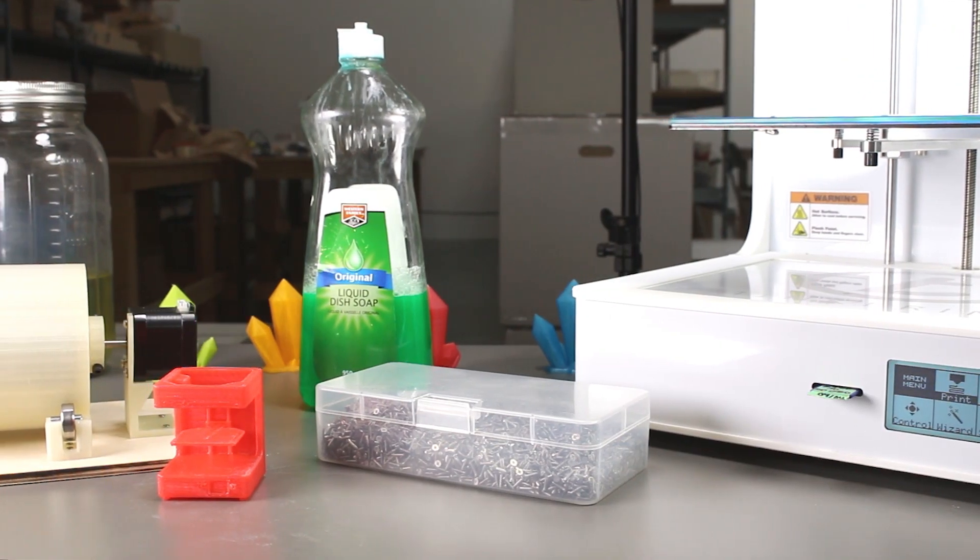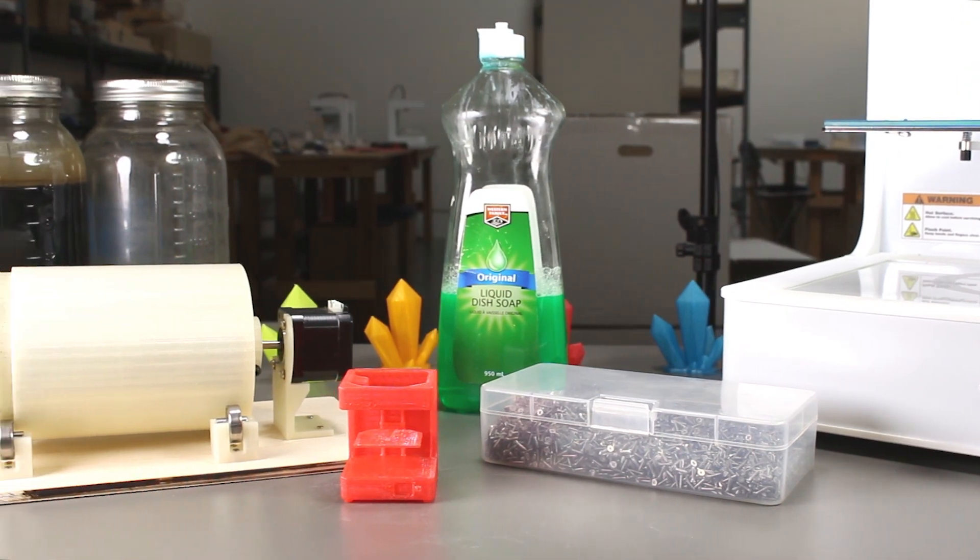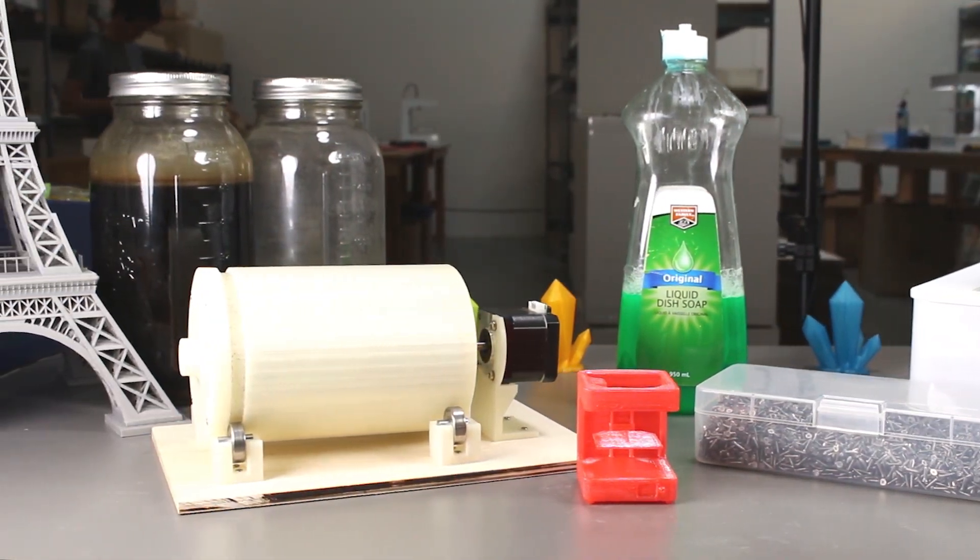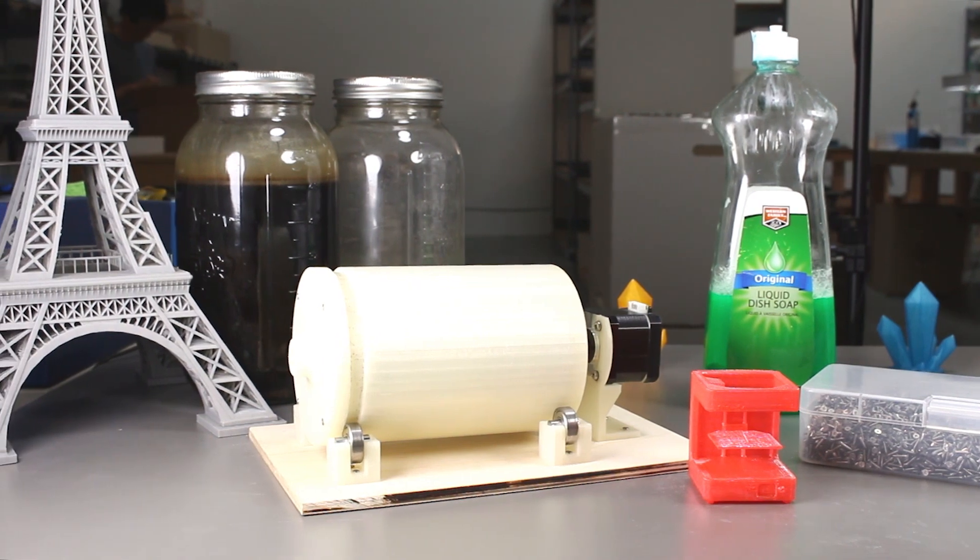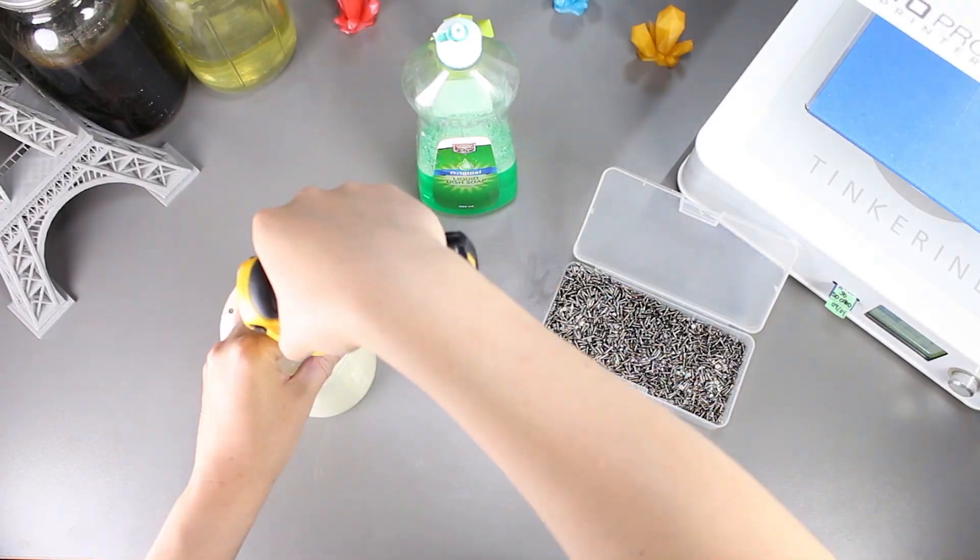One of our subscribers suggested to have a burnishing compound to our tumbler when tumbling, so we went back to using screws, but this time we'll be adding some dish washing soap to it. Let's start.